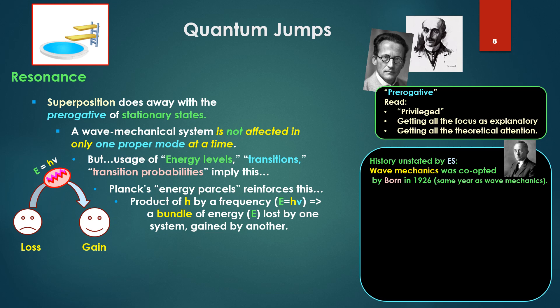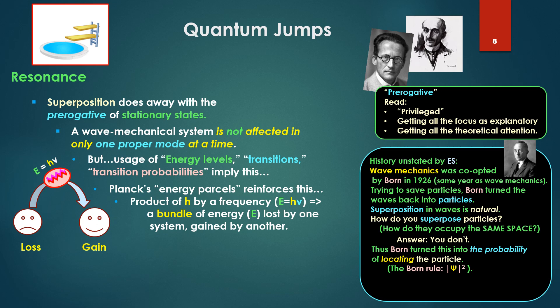A bit of history unstated by Herr Schrödinger. Wave mechanics was co-opted by Born in 1926, the same year that Schrödinger is talking about. Trying to save particles, Born turned to turn the waves back into particles. Wave mechanics had come along and showed everything as waves. Nope, back to particles. But superposition in waves is natural. But how do you superpose particles? That is, how do they occupy the same space? Waves in multiple modes can occupy the same space. How do you do that with particles? Answer, you don't. Thus, Born turned this into the probability of locating the particle. See, the Born rule, the famous Born rule of Copenhagen. Schrödinger in 1927: I am averse to this conception.